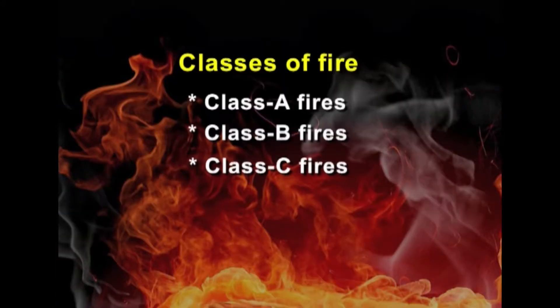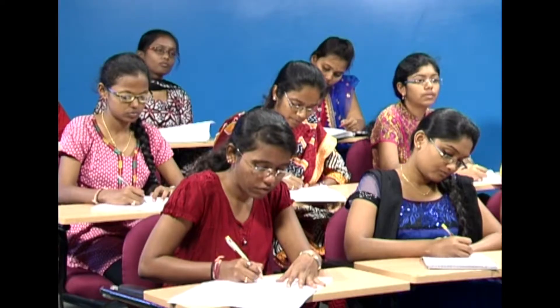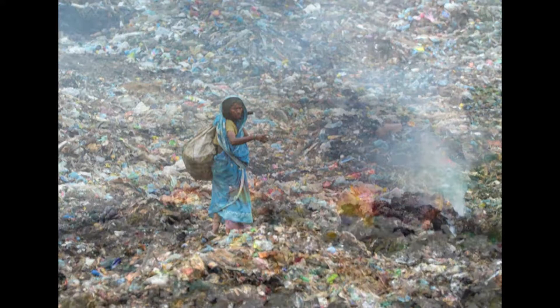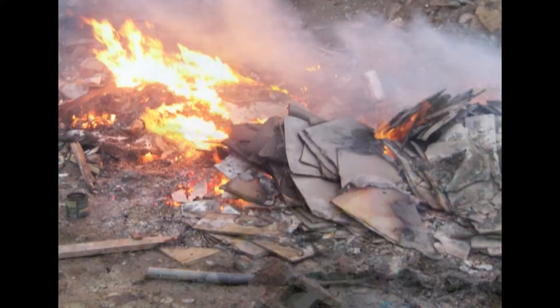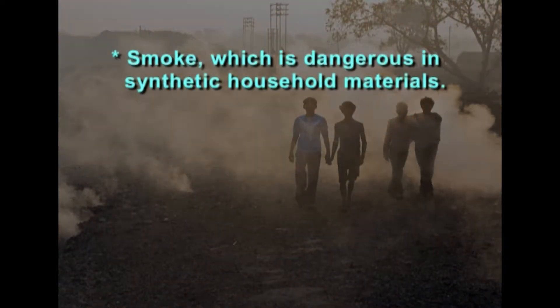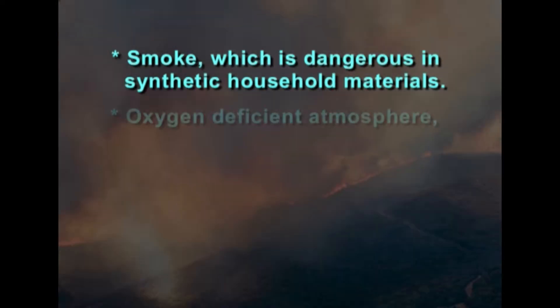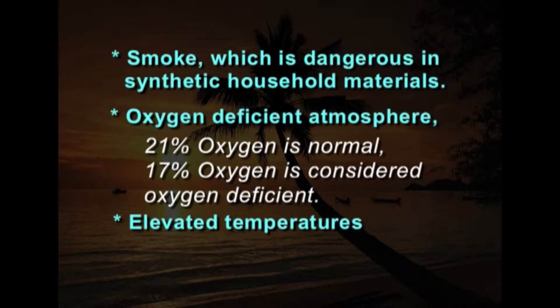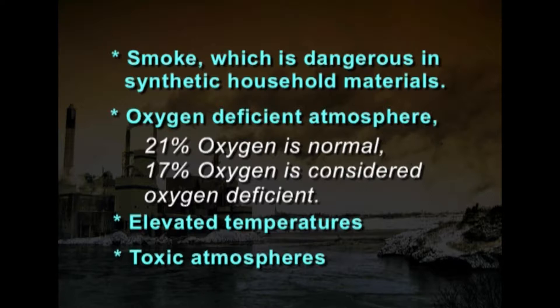Class C fires involve electricity as a continuous power source for plastic cable jackets. These kinds of fires can be effectively controlled by removing the oxygen. Now let us see the hazards caused by fire. One of the major contributing factors in firefighting operations is the toxic environment created by combusting materials. The four major hazards are: one, smoke, which is dangerous in synthetic household materials; two, oxygen-deficient atmosphere — 21% oxygen is normal, 17% is considered oxygen deficient; three, elevated temperatures; four, toxic atmospheres.